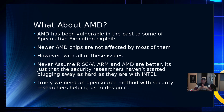AMD has been vulnerable in the past to some speculative execution exploits. They have said their newer chips are not affected by most of them, though I don't have a specific list. With all these issues, here's some advice: don't assume that just because Intel is having these problems, they won't show up on your processor as well. Don't assume that RISC-V, ARM, and AMD are better — that would be a fatal mistake. The security researchers are focusing on Intel because Intel's been around longer. They haven't started on AMD, RISC-V, or ARM yet. Give them time — they may find the same kinds of errors with those processors.